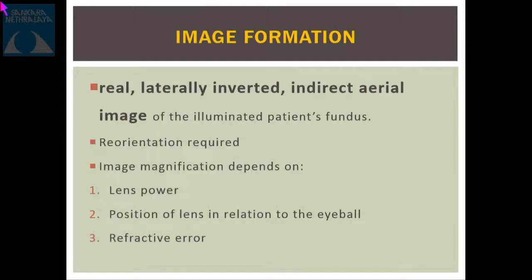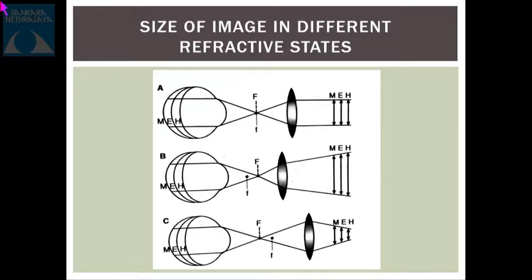In different refractive states, the small f is the principal focus of the lens and the capital F is the anterior focal point of the eye. In an emmetropic eye, if you move the lens somewhat towards or away from the patient within the permitted range, the image size will not alter significantly. In a myope, if you move the lens towards the patient's eye, the field of view will reduce but the magnification will increase.